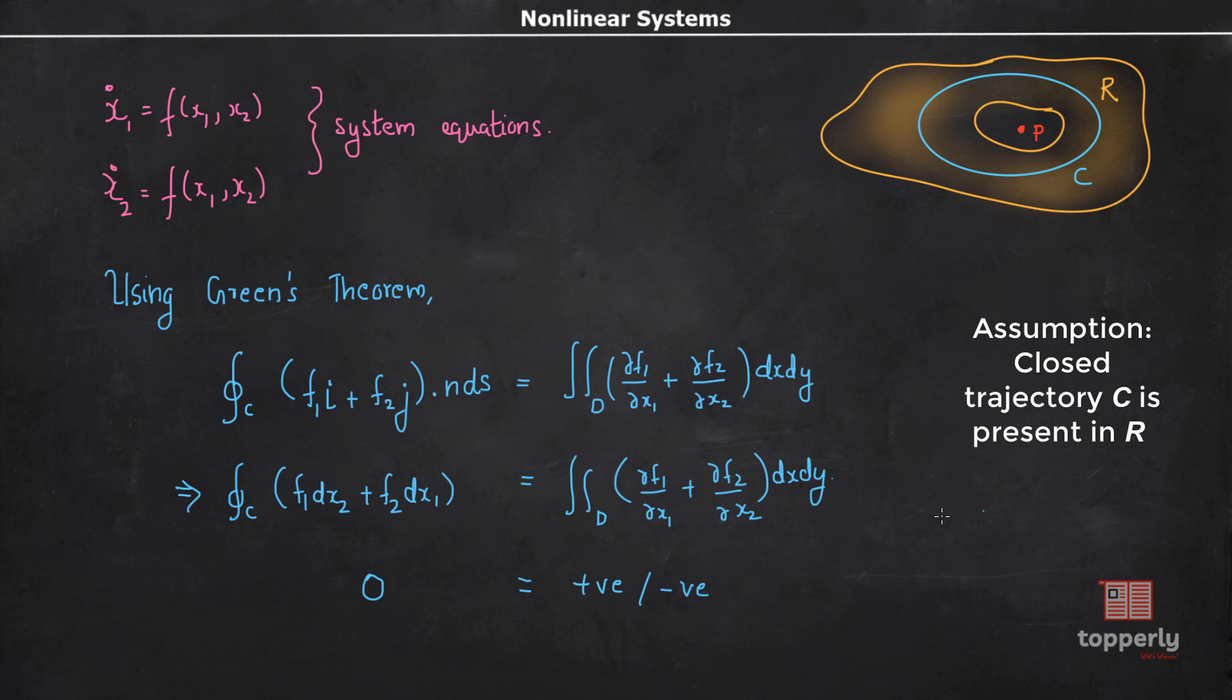If b is less than or equal to zero, then the expression ∂f₁/∂x₁ plus ∂f₂/∂x₂ is always negative, and by Bendixson criteria, limit cycle does not exist. Let me write that down. There are two cases for this. The first one is b is less than or equal to zero. In this case, limit cycle does not exist.